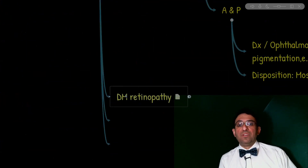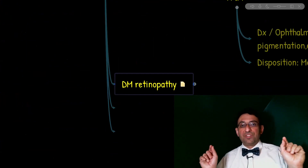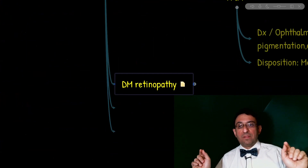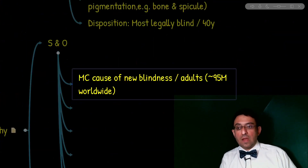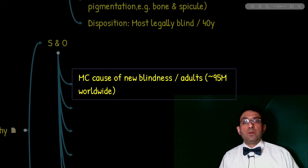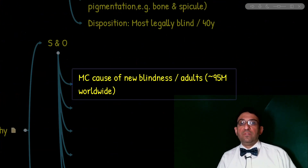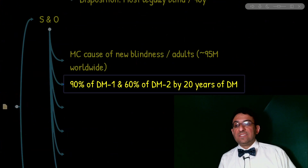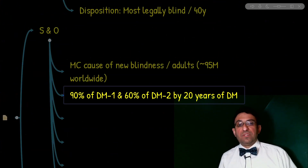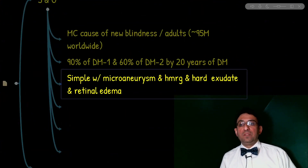Let's move to diabetic retinopathy. An important term in ophthalmoscopic assessment is macular edema — its presence is associated with impaired vision. Diabetic retinopathy is the most common cause of new blindness among adults worldwide, with 95 million cases. After 20 years of diabetes, 90% of type 1 and 60% of type 2 patients have some degree of retinopathy. The important stages are: simple, pre-proliferative, proliferative, and macular edema.